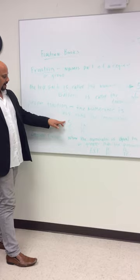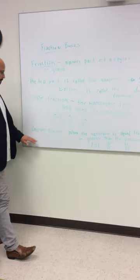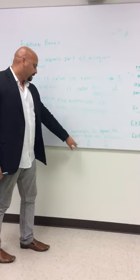An improper fraction is when the numerator is either equal to or greater than the denominator. Example: 10 over 10, they're equal, or 12 over 10.